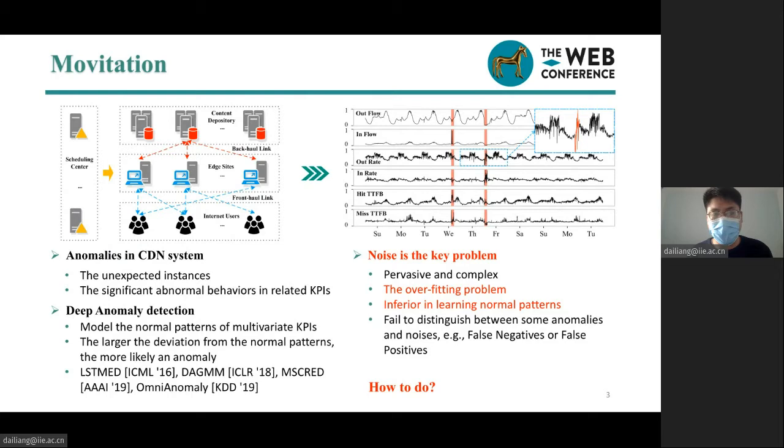However, the performance of deep anomaly detection is vulnerable to noise present in multivariate KPIs, since the models are also trained to learn the distribution of noise in addition to normal data, suffering from problems of overfitting. Unfortunately, noise is not unusual in raw multivariate data due to the volatile system environment and fine granularity. As shown on the right, multivariate time series data of CDN often exhibits non-additive Gaussian noise, such as multiplicative Gaussian, presenting complex data distributions. The existing methods tend to present decent performance in learning normal patterns, leading to false negatives or false positives.